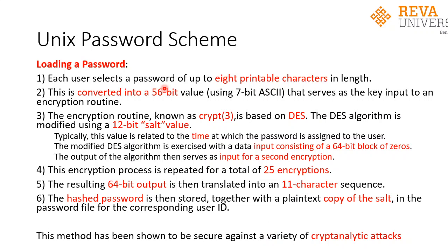Looking at the UNIX password scheme helps us understand how passwords are stored in a machine. While loading a password, the user selects a password of 8 characters in length. These 8 characters are in ASCII format using 7-bit ASCII, so they are converted into a 56-bit value — that is 7 multiplied by 8 equals 56. This 56-bit value serves as a key input to an encryption routine called Crypt3, which is based on the Data Encryption Standard DES algorithm.